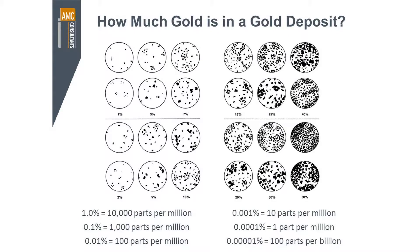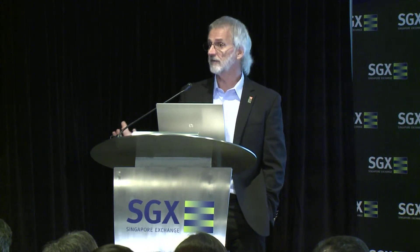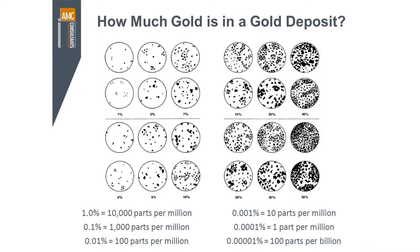This is a range of pictures showing you what you would see if you had different levels of concentration. In the bottom right hand side, those circles show if you had something that was 50% — one of the common minerals we mine at 50% is iron. If you have an iron ore mine, you'll often have grades of iron of 50% or more. Those circles show gradations all the way down to 1%, and if you had something that was 1%, that's what you would see if you picked up a sample.